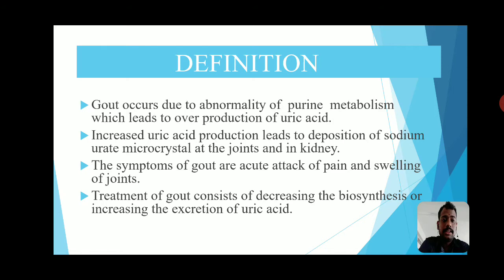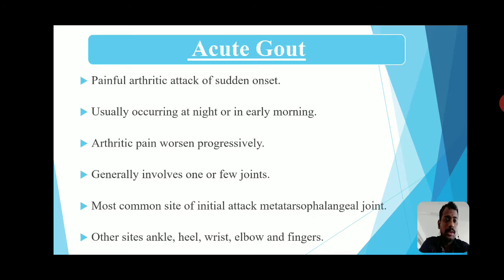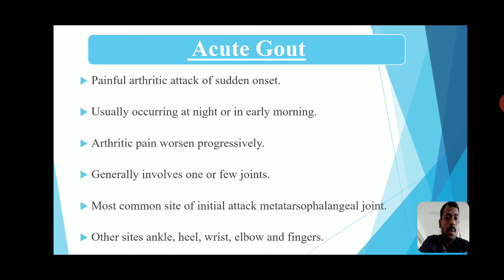There are two types of gout: acute gout and chronic gout. Acute gout is a painful arthritic attack of sudden onset. It progressively converts to chronic gout. The pain typically occurs at night or in the early morning.